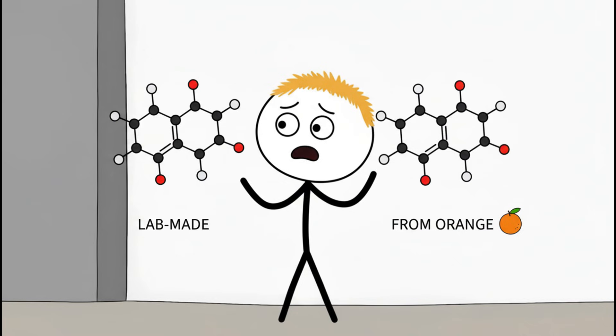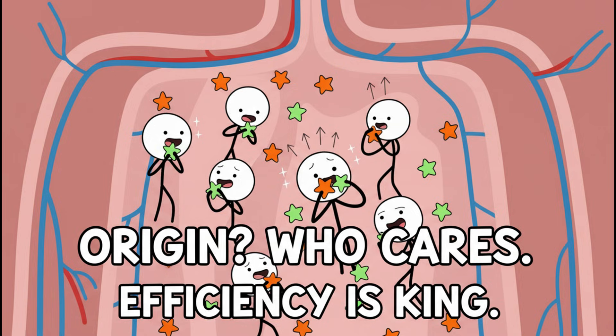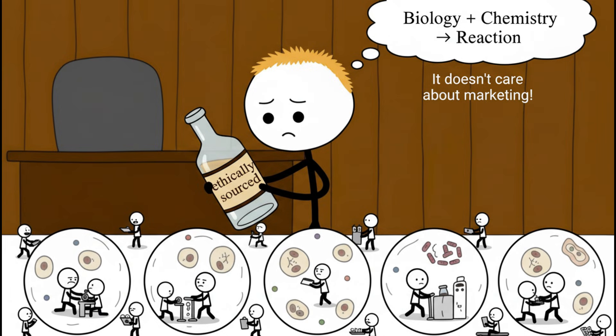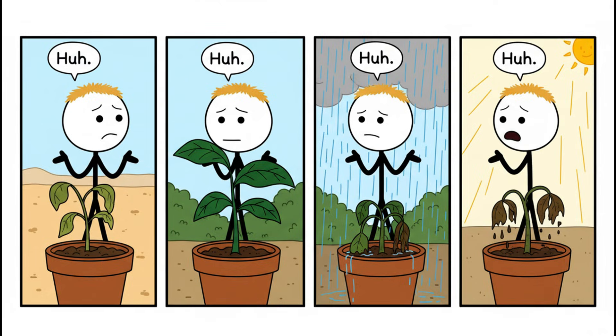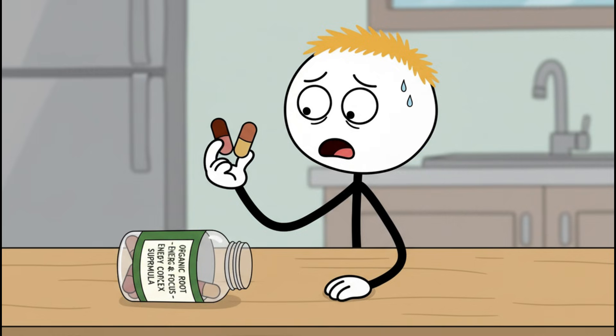But vitamins don't care where they came from. Vitamin C from a lab and vitamin C squeezed out of an orange, molecule for molecule, do the same thing in your body. Your cells don't clap because it was ethically sourced. Worse, natural supplements are often less predictable. Plants vary by soil, climate, harvest timing, and processing.